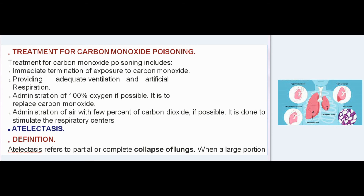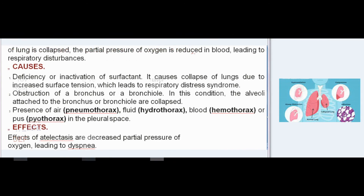Atelectasis refers to partial or complete collapse of lungs. When a large portion of lung is collapsed, the partial pressure of oxygen is reduced in blood, leading to respiratory disturbances. Causes include: deficiency or inactivation of surfactant causing collapse due to increased surface tension, leading to respiratory distress syndrome; obstruction of a bronchus or bronchiole causing collapse of attached alveoli; and presence of air (pneumothorax), fluid (hydrothorax), blood (hemothorax), or pus (pyothorax) in the pleural space. Effects include decreased partial pressure of oxygen, leading to dyspnea.